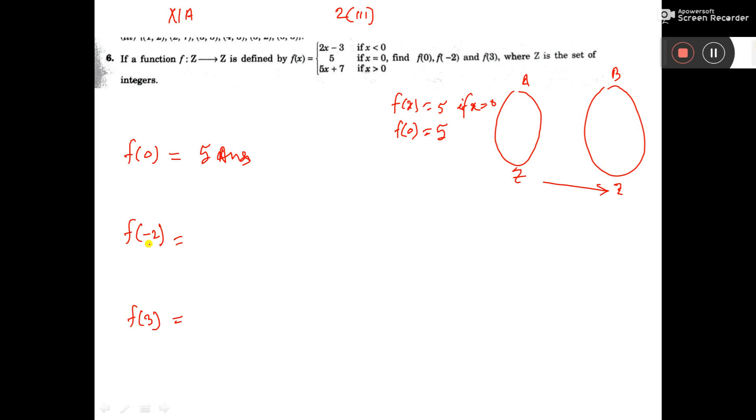Then you see, f(-2) equals—here is the function, f(x) equals 2x minus 3. Why? Because it is written x less than 0. Now see, here we are finding f(-2), that means the value is less than 0.